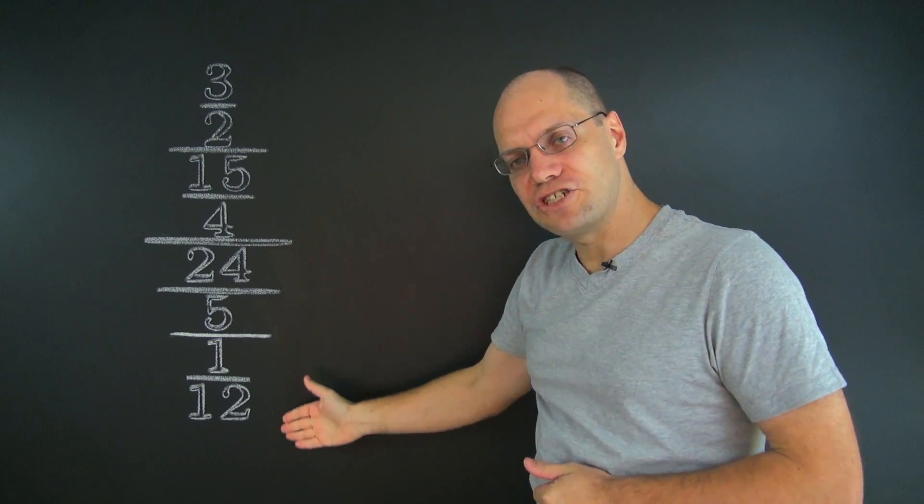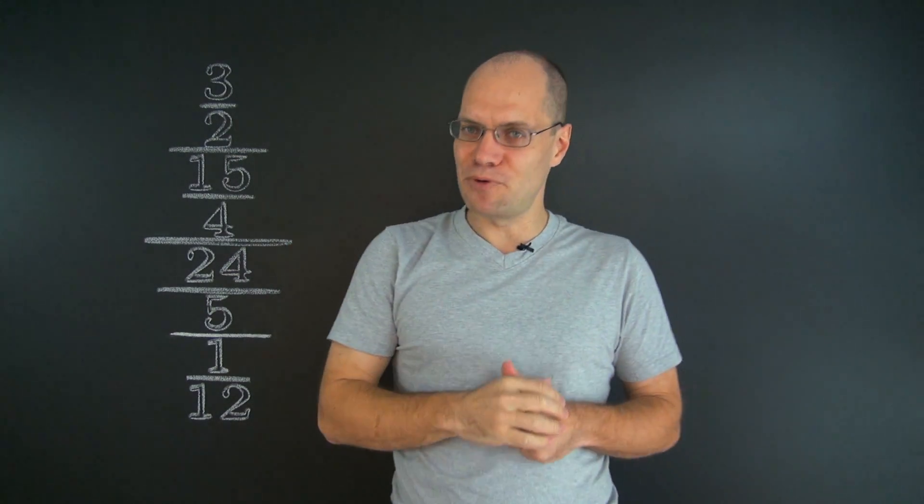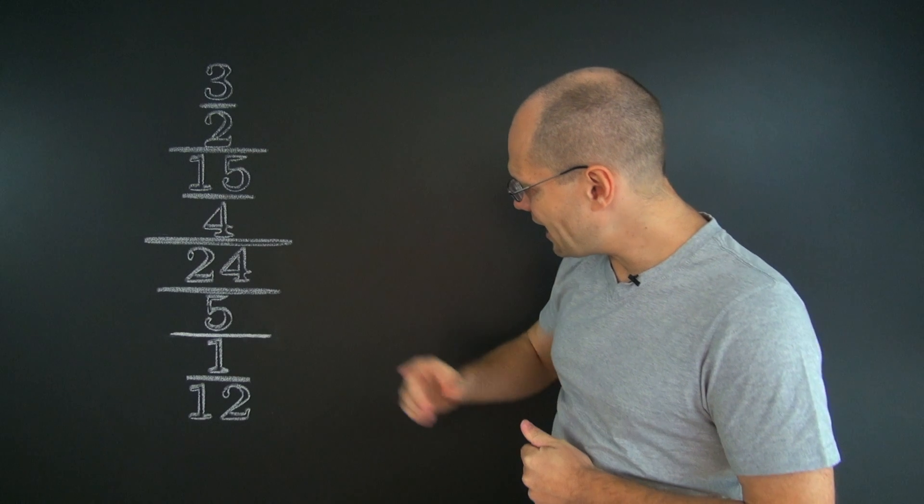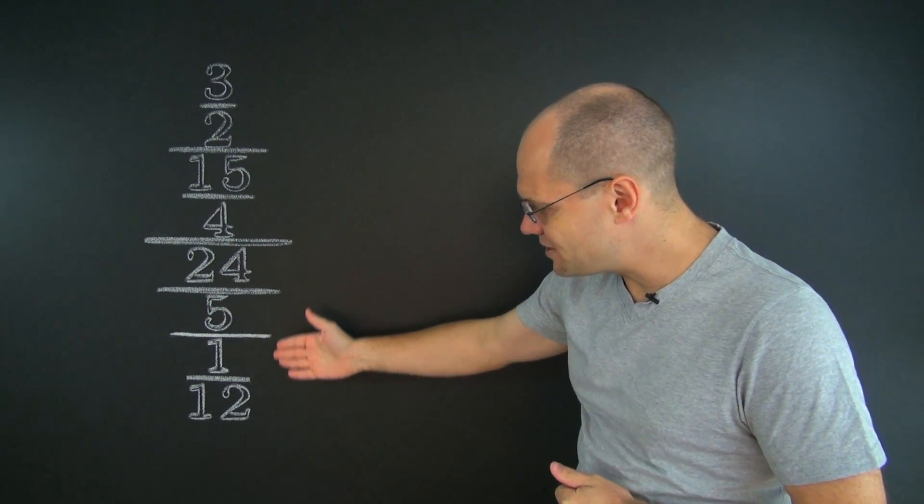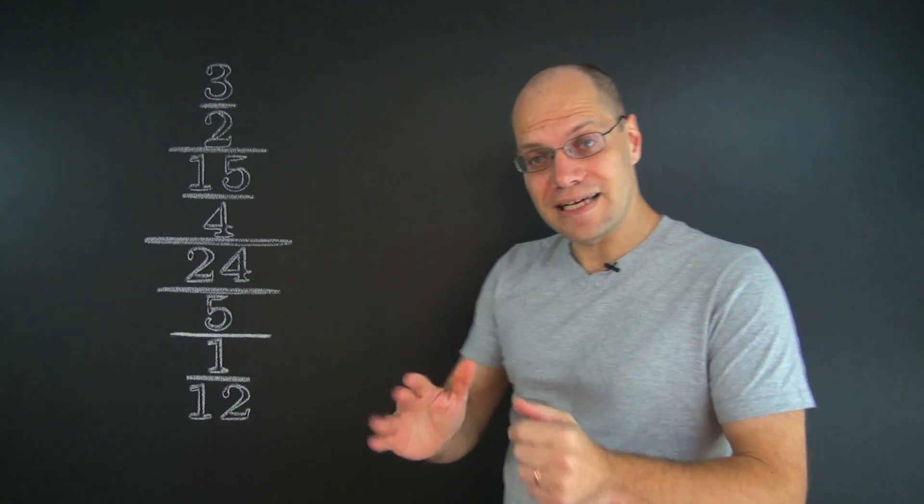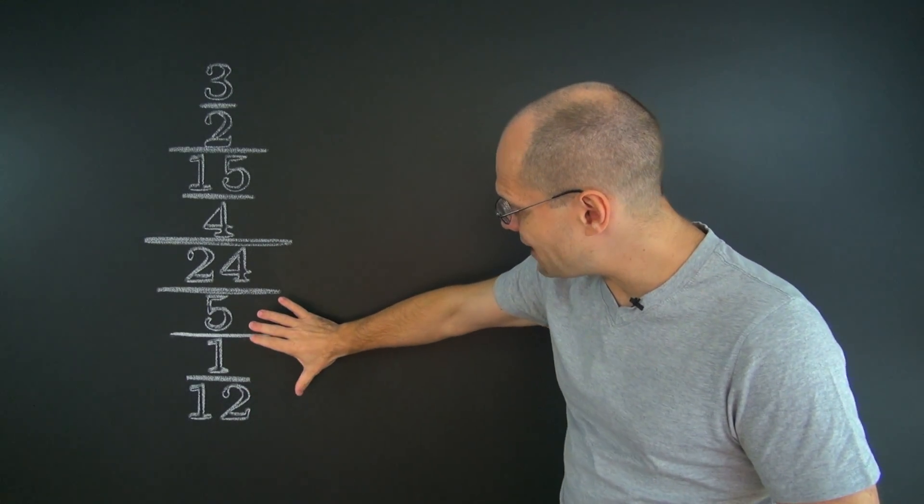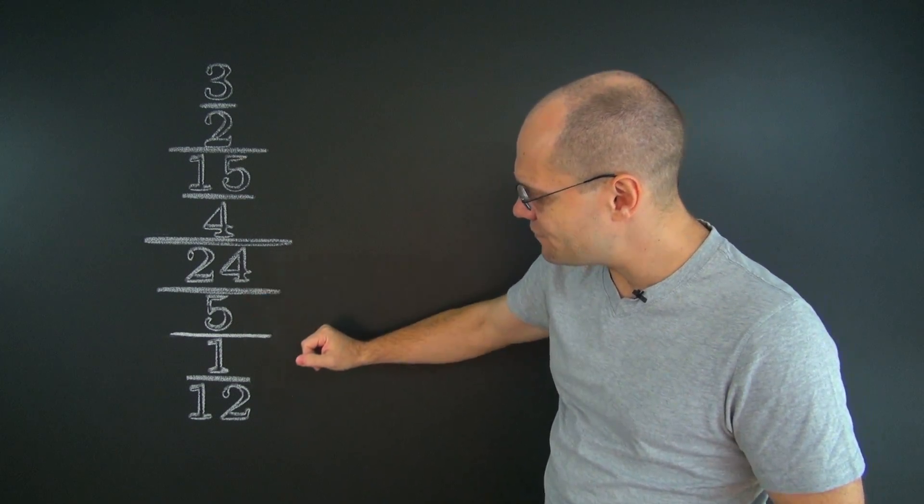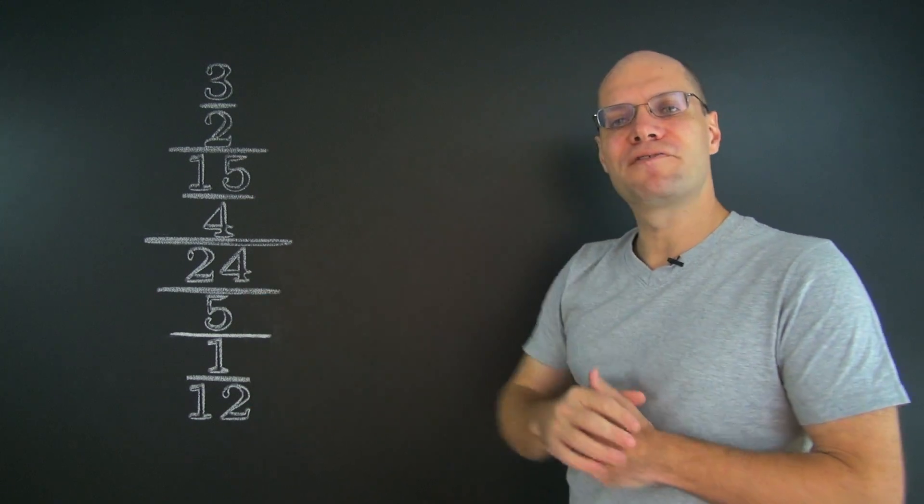The compound fraction on the bottom is a little bit more complicated. What we have is the number 24 over this compound fraction. And if we drill down one step deeper, we'll see that the fraction in the denominator is the number 5 over this simple fraction.